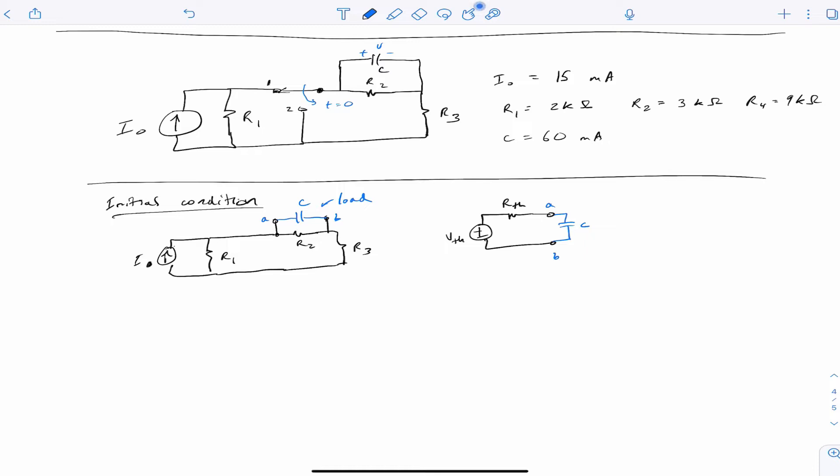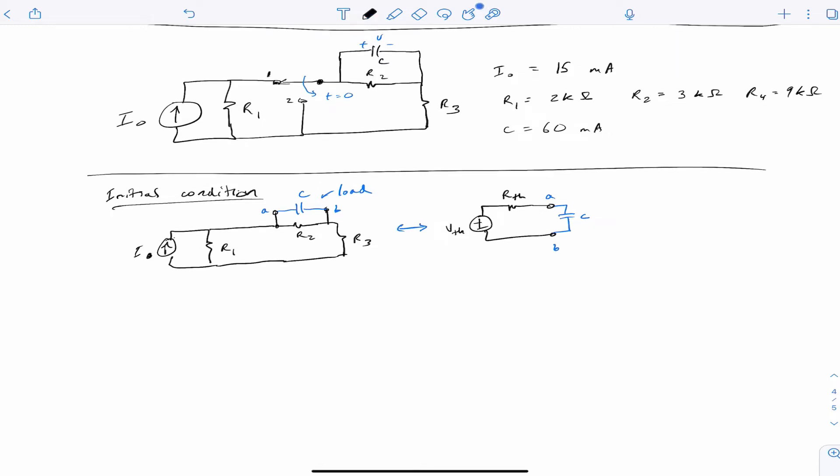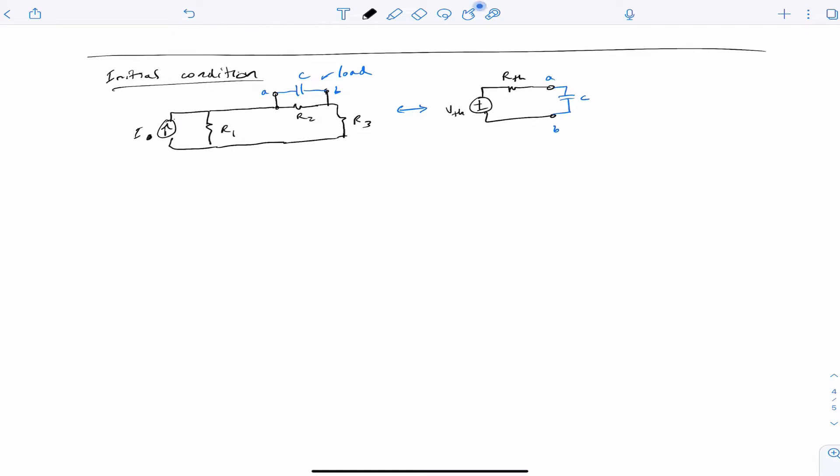I've labeled these nodes A and B. Let's go about finding the Thevenin resistance and the Thevenin voltage. For the Thevenin voltage, I can do a source transformation. We want to be careful about recognizing that this is node A here, and this is node A here, and node B, and node B. So those are on either side of R2.